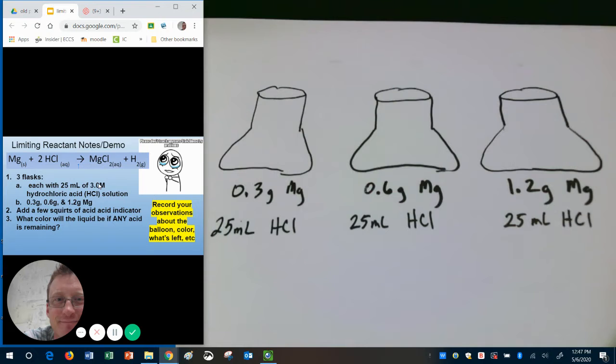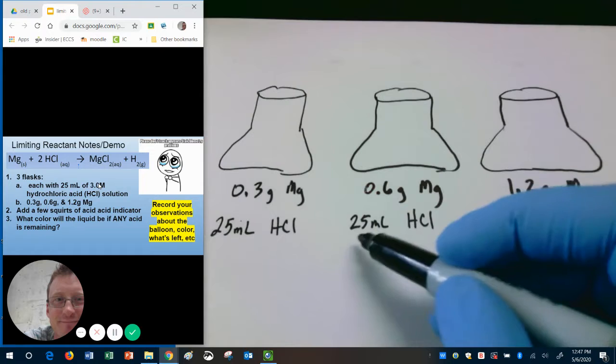We can't have grams, we can't have milliliters, we have to have moles. It's one mole of Mg mixed with two moles of HCl will make one mole of MgCl2 and one mole of H2. So we need to know how many moles is this?